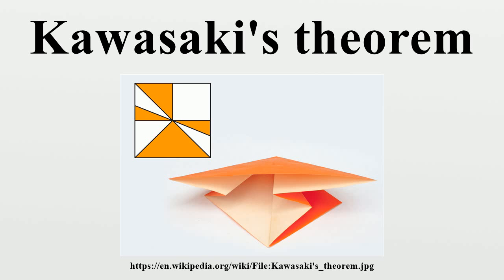Kawasaki himself has called the result Hussimi's theorem, after Yasuji Hussimi, and some other authors have followed this terminology as well. The name Kawasaki's theorem was first given to this result in Origami for the Connoisseur by Kunihiko Kasahara and Toshi Takahama. Hull credits the lower bound of 2n on the number of different flat foldings of a crease pattern meeting the conditions of the theorem to independent work in the early 1990s by Azuma, Justin, and Ewans and Hull.